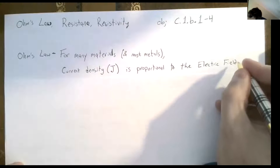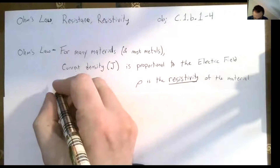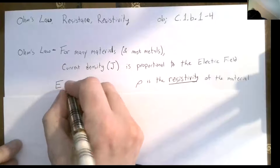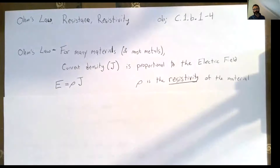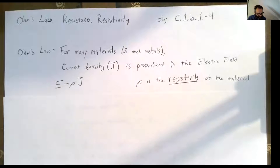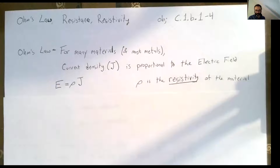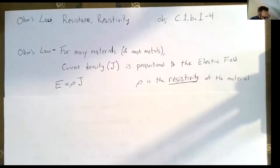The electric field — the larger the electric field in a wire, the more current density you're going to have. We can write that as an equation: the magnitude of the electric field equals this constant of proportionality rho times the current density J. Remember, the current density is just the current per unit area. The constant of proportionality depends on what material the conductor is made of — that's called the resistivity. Sometimes you'll see the reciprocal of resistivity called the conductivity, but you really only need to know about one of them.